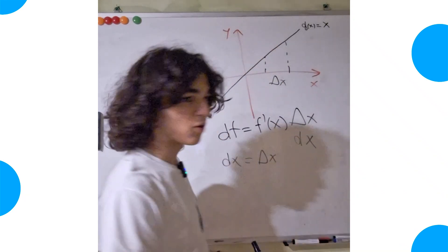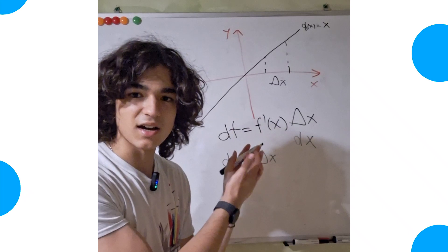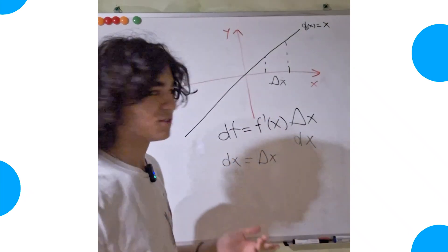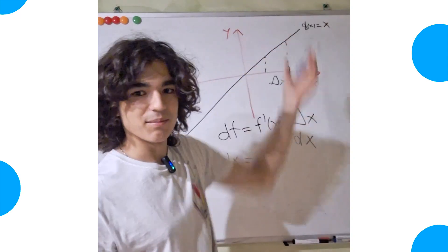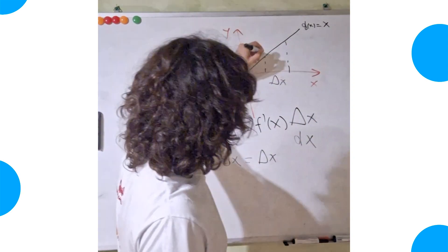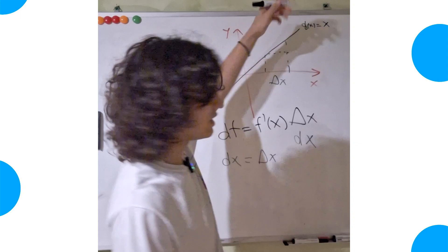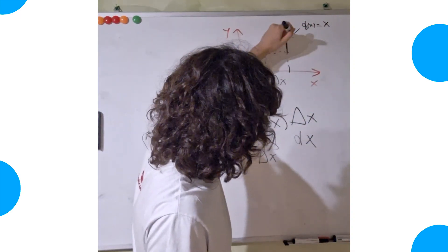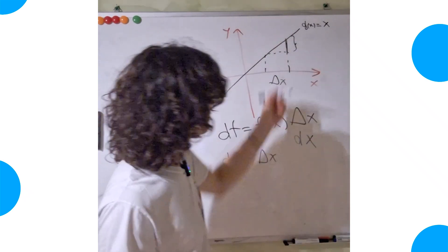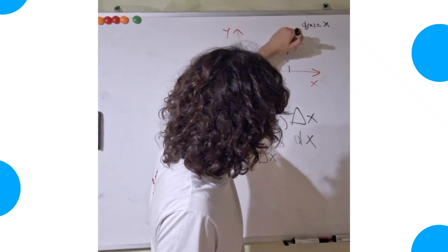there's an increment of the tangent line. But this is a line. So the tangent line to this line simply is the same line. So the increment of the tangent, so the line, is this difference here.